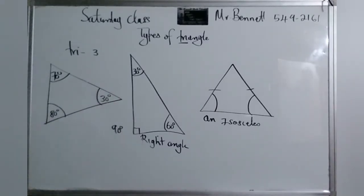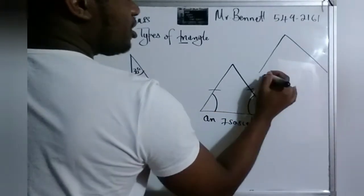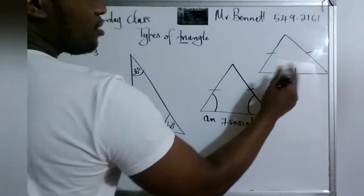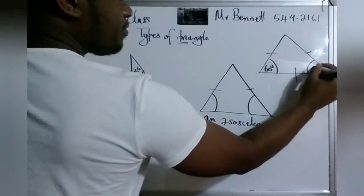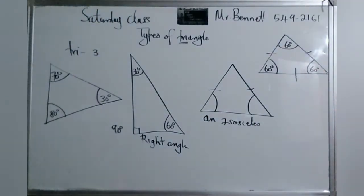So with the scalene, no angles and no sides are equal. All right, I'm going to make space for one more, which is the equilateral. And all sides, as the name suggests, all sides are equal. So that means all angles are equal. All of them are 60.